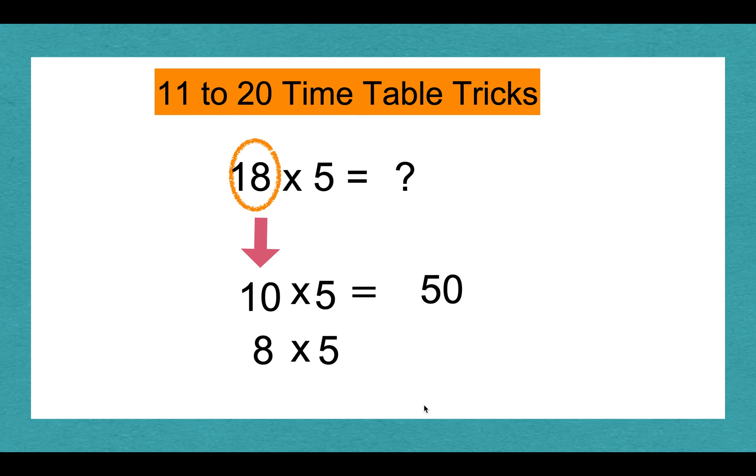10 times 5 equals 50, and 8 times 5 equals 40. 50 plus 40 equals 90. 90 is our answer, and 18 times 5 equals 90.